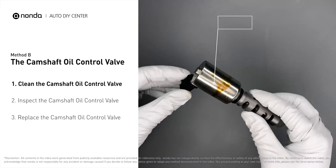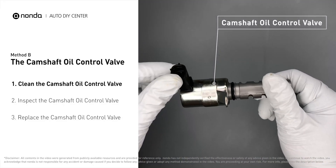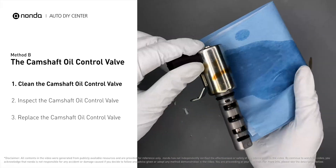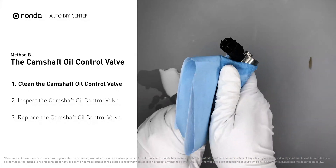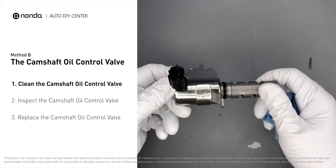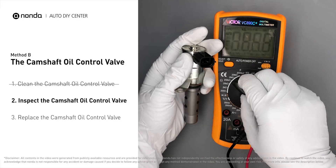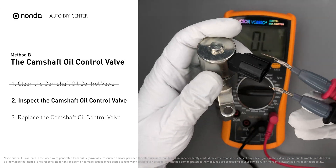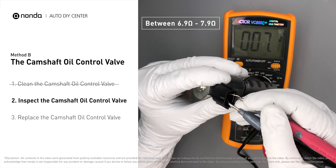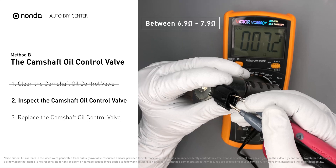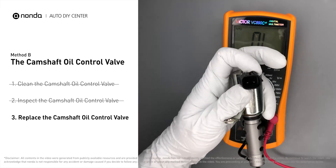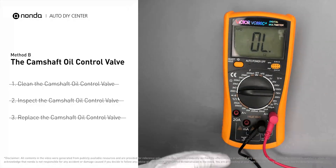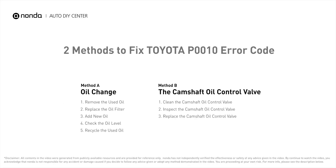Method B: The Camshaft Oil Control Valve. First, carefully remove the camshaft oil control valve from the engine. Use a valve cleaner to clean the camshaft oil control valve, then use a multimeter to test it. At an ambient temperature of 68 degrees Fahrenheit, the valve resistance should be between 6.9 ohms and 7.9 ohms. If you do not get a reading within this range, the camshaft oil control valve is faulty and needs to be replaced.